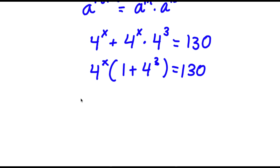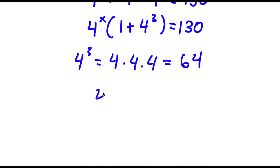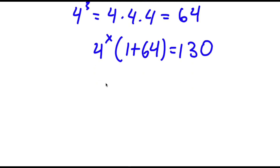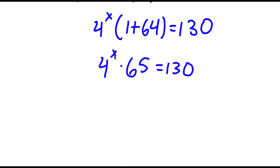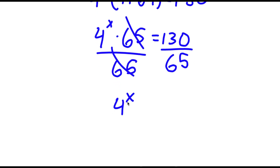Now 4 to the power of 3 is equal to 4 times 4 times 4: 4 times 4 is 16, and 16 times 4 is 64. So now I have 4 to the power of x times 1 plus 64 is equal to 130. Now 1 plus 64 is 65, so I have 4 to the power of x times 65 is equal to 130. I'm going to divide both sides by 65, so these two cancel out and I'm left with 4 to the power of x is equal to 130 divided by 65, which is 2.